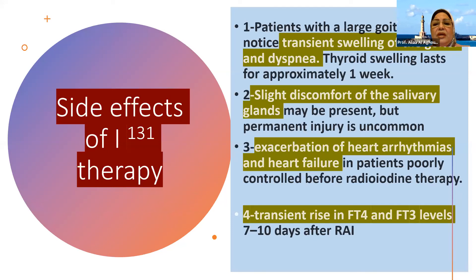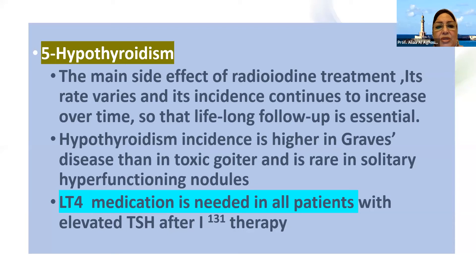The side effects of radioiodine include transient swelling of the goiter and dyspnea in patients with a large goiter; thyroid swelling may last approximately one week. Slight discomfort of the salivary glands may be present, but permanent injury is uncommon. Exacerbation of heart arrhythmia and heart failure may occur in patients poorly controlled before radioiodine therapy. A transient rise in free hormone levels 7 to 10 days after radioactive iodine may occur. The occurrence of hypothyroidism is the main side effect; its incidence continues to increase over time, so lifelong follow-up is essential. Hypothyroidism incidence is higher in Graves' disease than in toxic goiter and rare in solitary hyperfunctioning nodules. Levothyroxine medication is needed in all patients with elevated TSH after radioactive iodine.